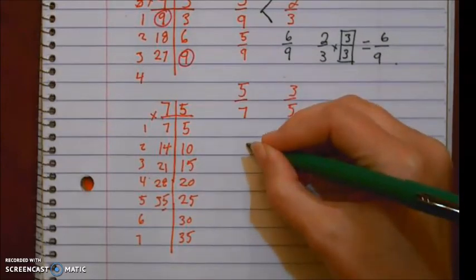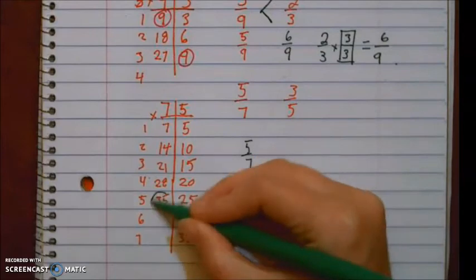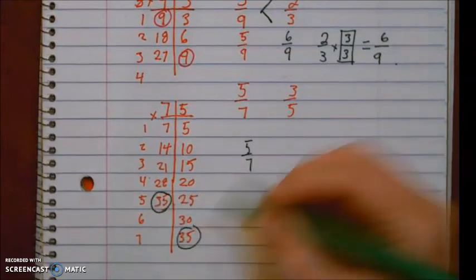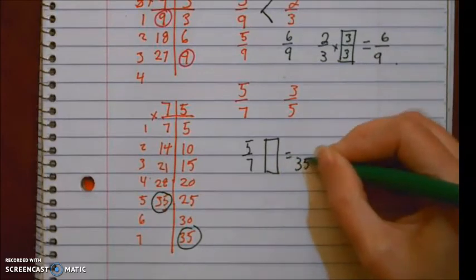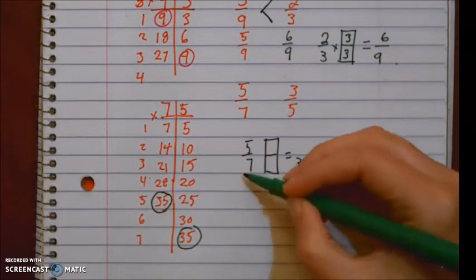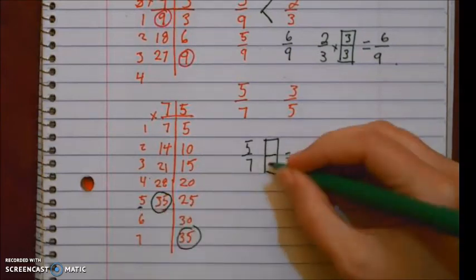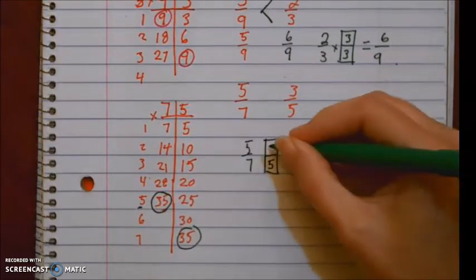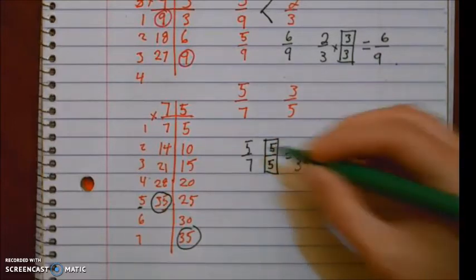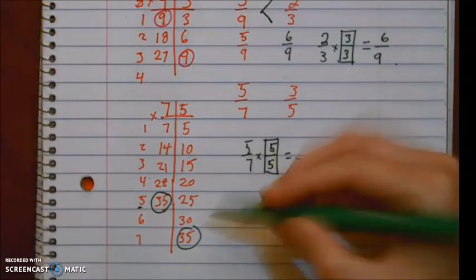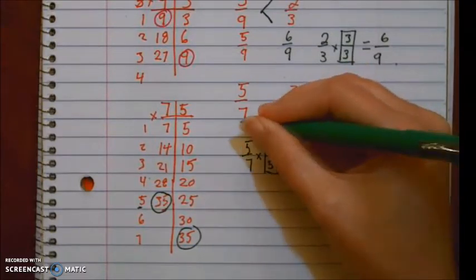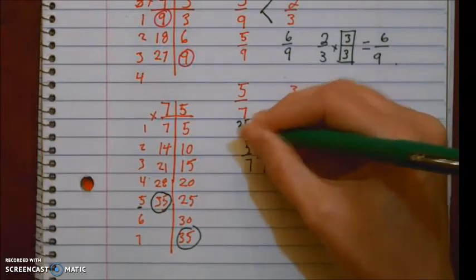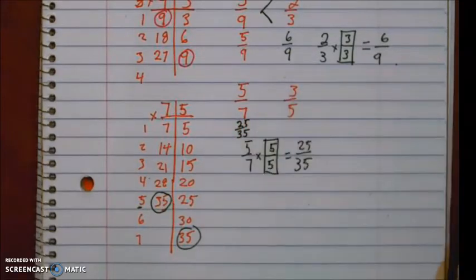Okay, so five sevenths. Here's my common denominator, the 35. I need my new denominator to be 35. Seven times what gives me 35? Five. Since there's a five in the denominator, I have to also put a five in the numerator. Five times five, well I've already done it, it's right here, is 25. So five sevenths is the same as 25 thirty-fifths, which we definitely don't have fraction bars for.